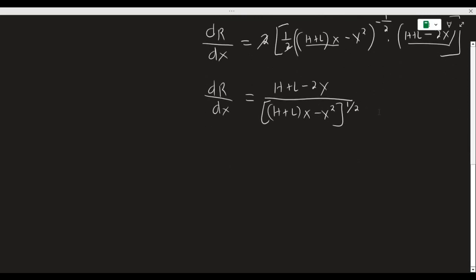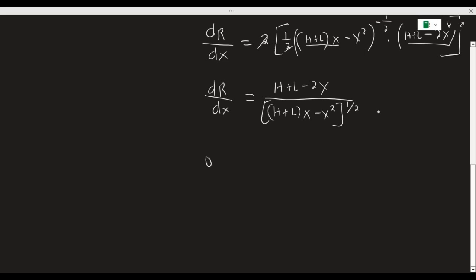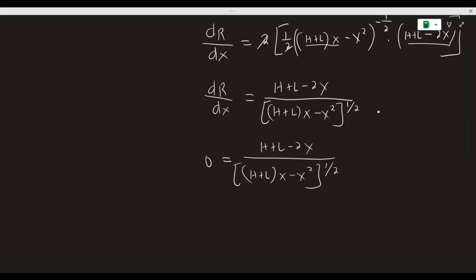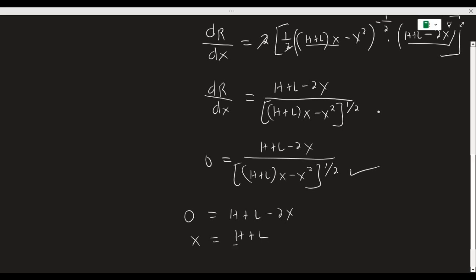The next step is to set the derivative of r with respect to x equal to zero. So zero equals (h + l − 2x) over (xh + lx − x²) to the power one half. Multiplying both sides of the equation by that quantity, we get zero equals h + l − 2x. Solving for x, we get x = (h + l) / 2.